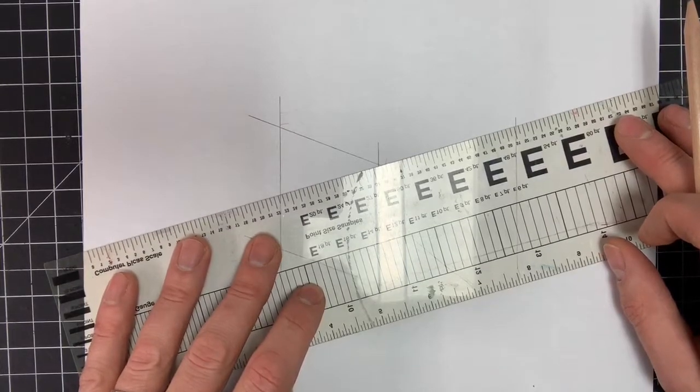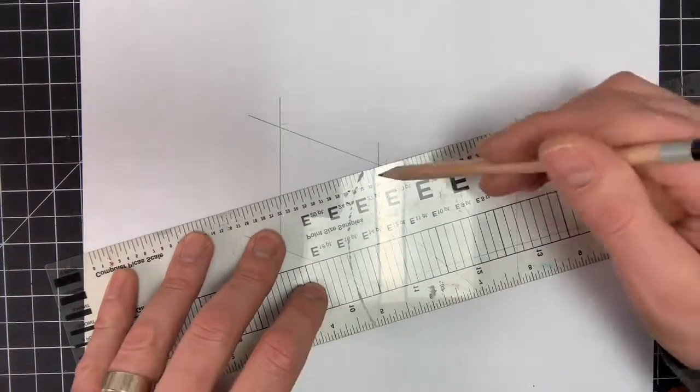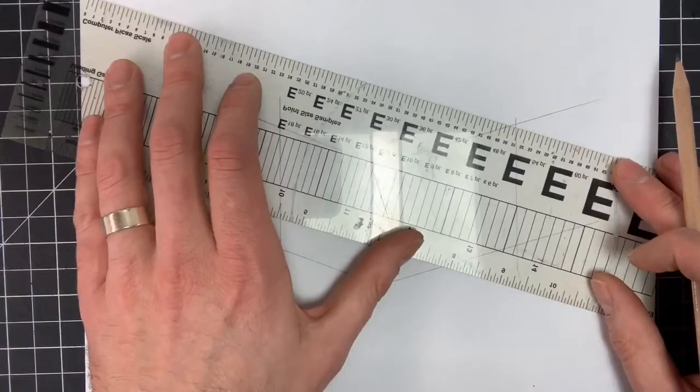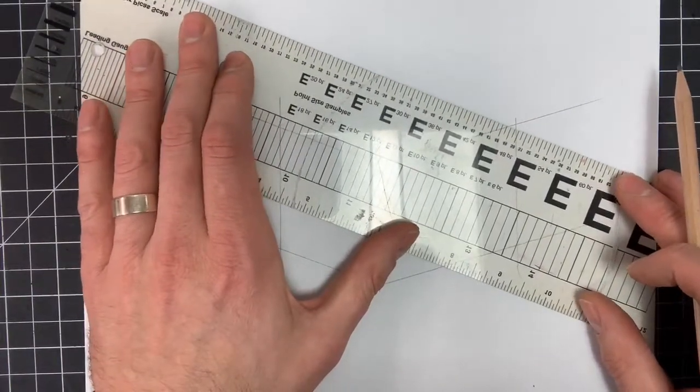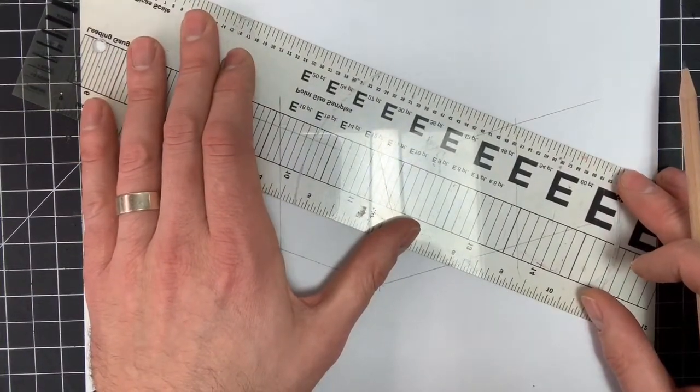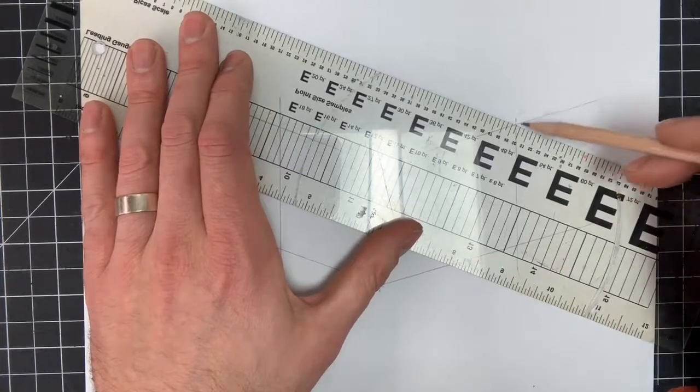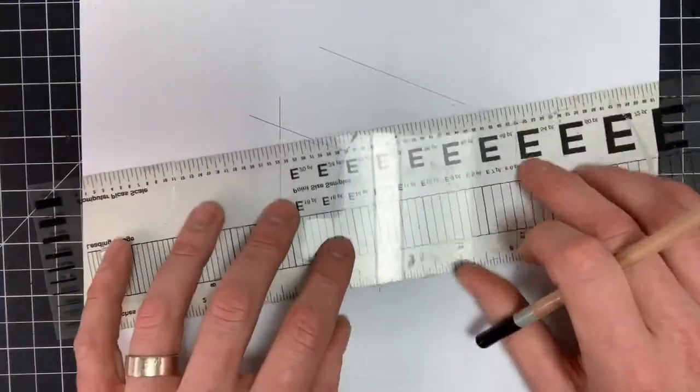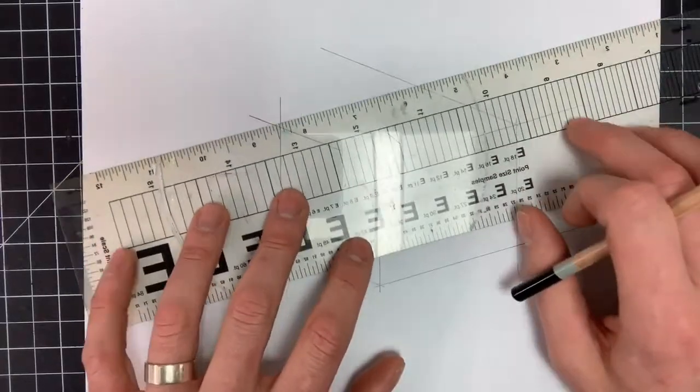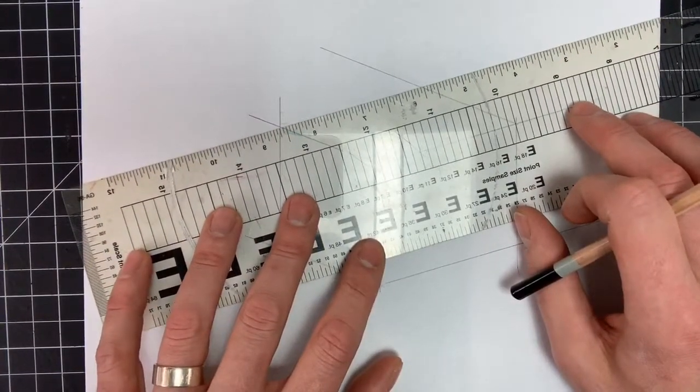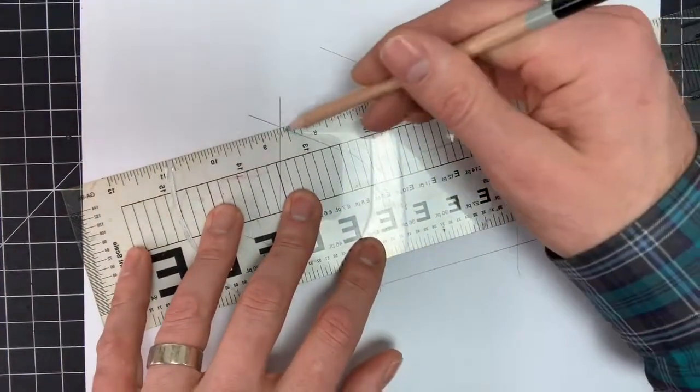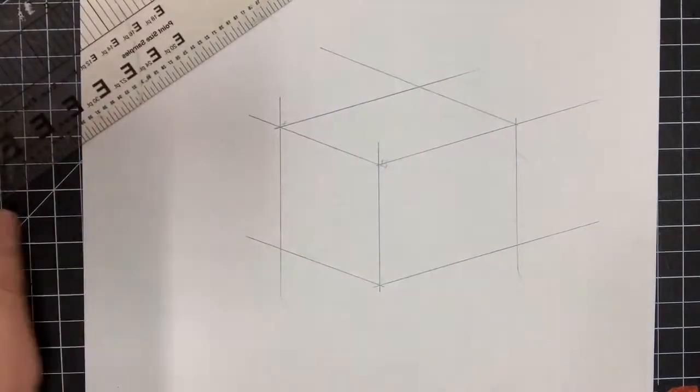And I'm trying to just guesstimate the parallel lines. Typically, I'll use two sliding transparent triangles to get perfect parallel lines. In this case, I'm unable to find my triangle. So I'm just going to do my best to make the lines parallel on my own.